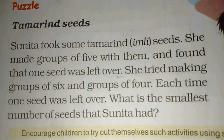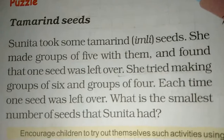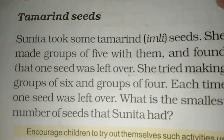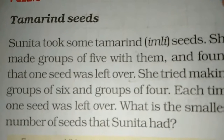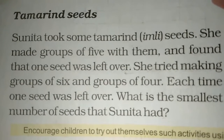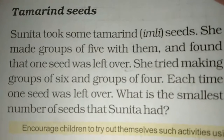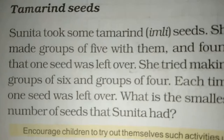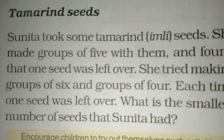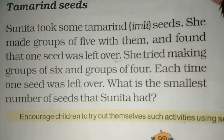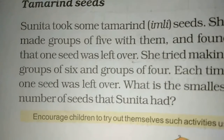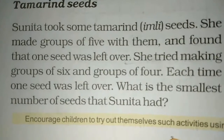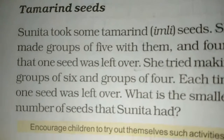Sunita took some tamarind seeds. She made groups of five with them and found that one seed was left over. She tried making groups of six and groups of four — each time one seed was left over. What was the smallest number of seeds that Sunita had?